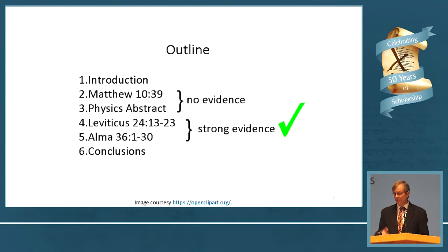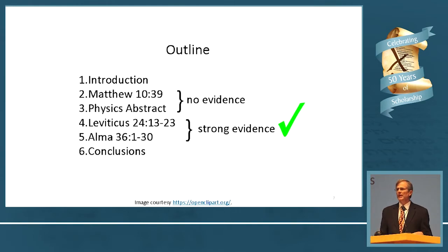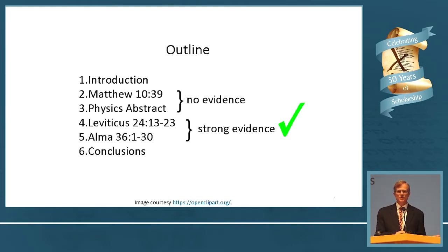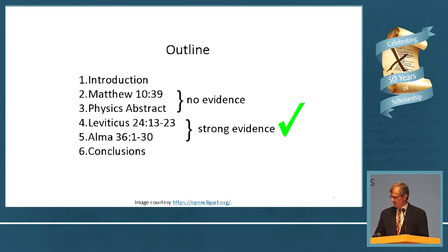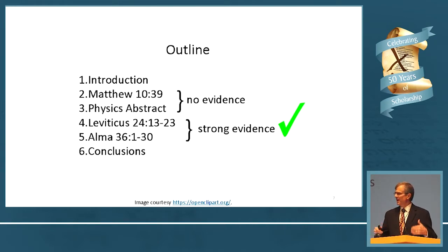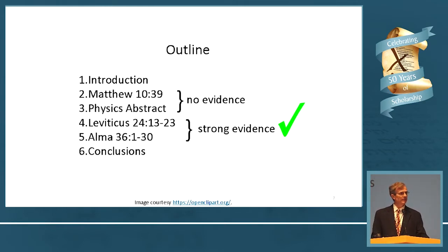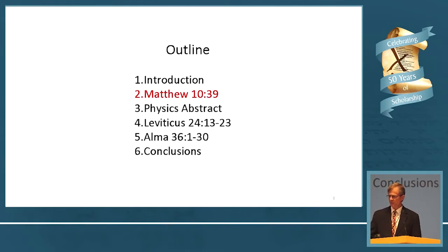The reason is that we set up the test to be as strict as possible — rigorous statistically, defensible statistically — and that leads to fairly strict results. The four examples I'll do: for the first two, statistics offers no evidence for or against intentionality — it says nothing about them — those being Matthew and a physics abstract. In the final two, one from the Old Testament and the other from the Book of Mormon, statistics offers strong evidence of intentionality. In those two cases, the case for intentionality can be considered to be closed. They were intentional. The author meant to put them in.